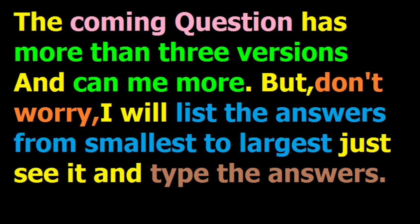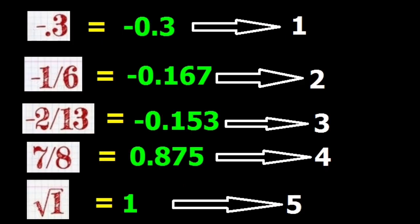The coming question has more than 3 versions, or can be more. But I will show you a trick that will help you get a 100% score. In this question, just see this image. I have arranged the numbers in ascending order from smallest to largest. Just see these numbers and write their answer.